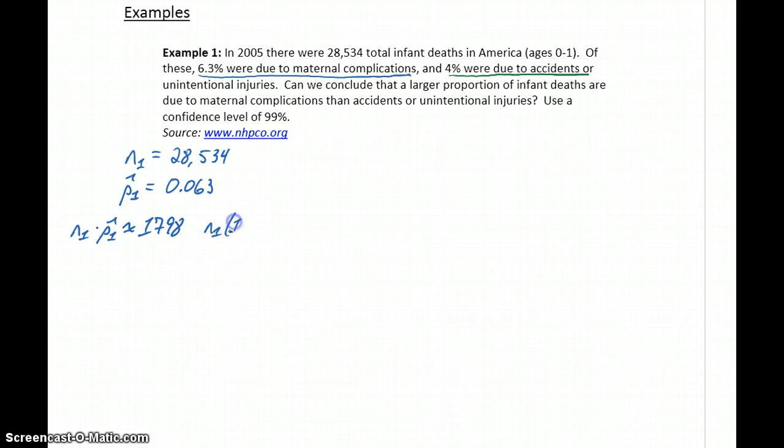And N1 times 1 minus P1 hat to be approximately 26,736. So we can see right away we've got number of successes, number of failures much larger than 10, so our conditions are met for the first sample.